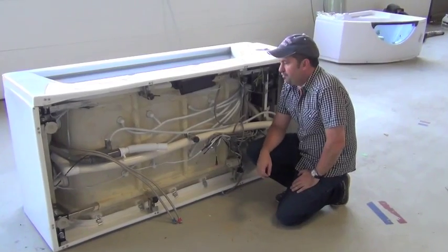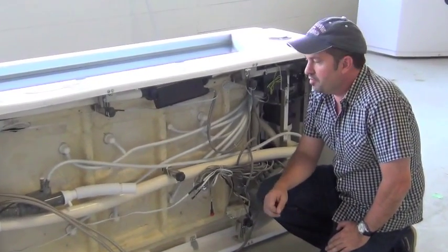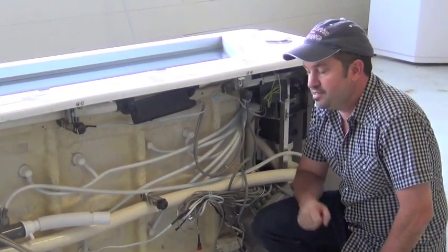Okay, here's the underside of the 905 jetted tub from Luxury Spas. Now in this video I'm going to go over the electrical and plumbing and show you how easy that is.